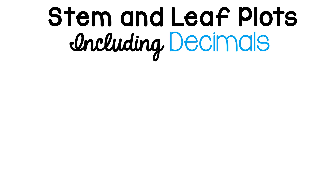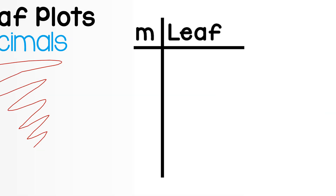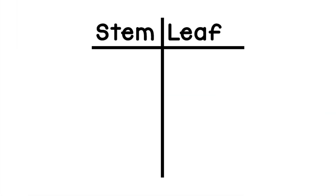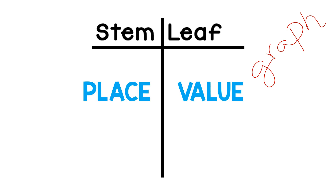Hello everyone and thank you for watching. Today's video is going to be over stem and leaf plots including decimals. Stem and leaf plots are a type of graph and we use these types of graphs to organize data and information. Stem and leaf plots organize the data by their place value.